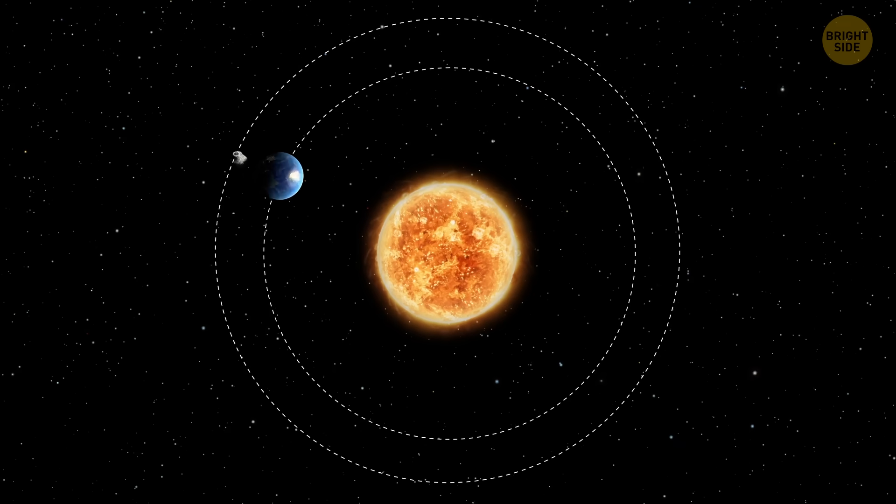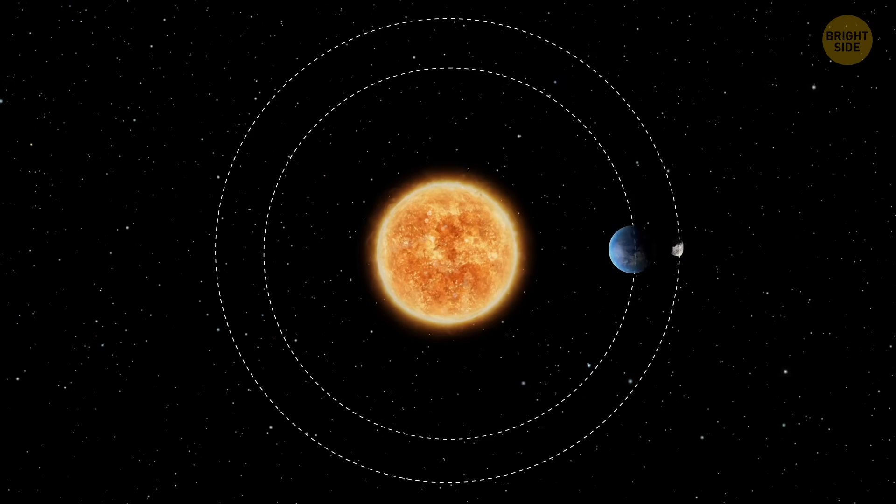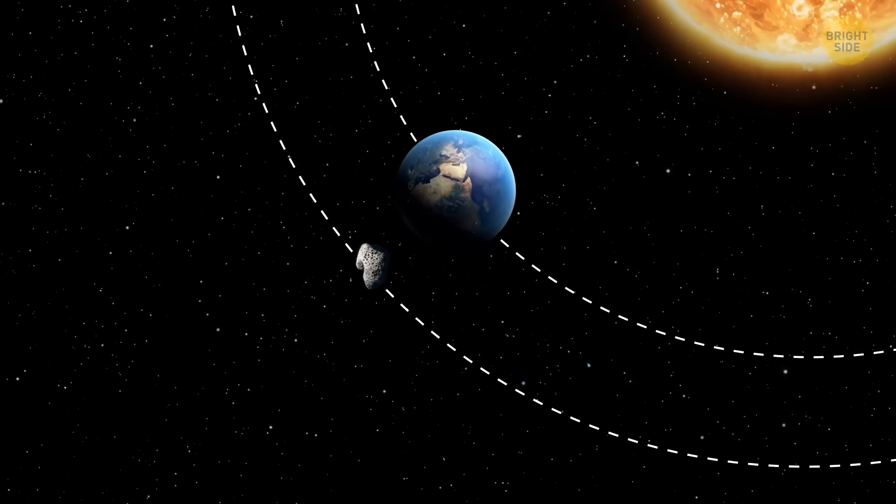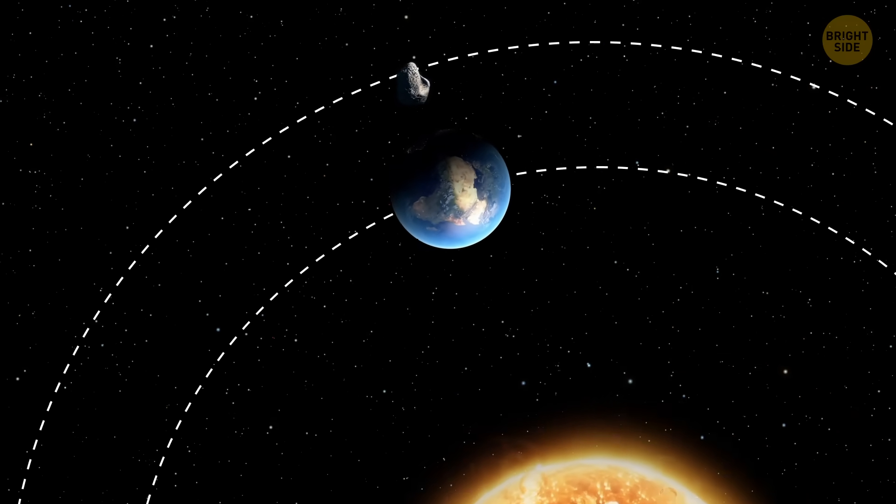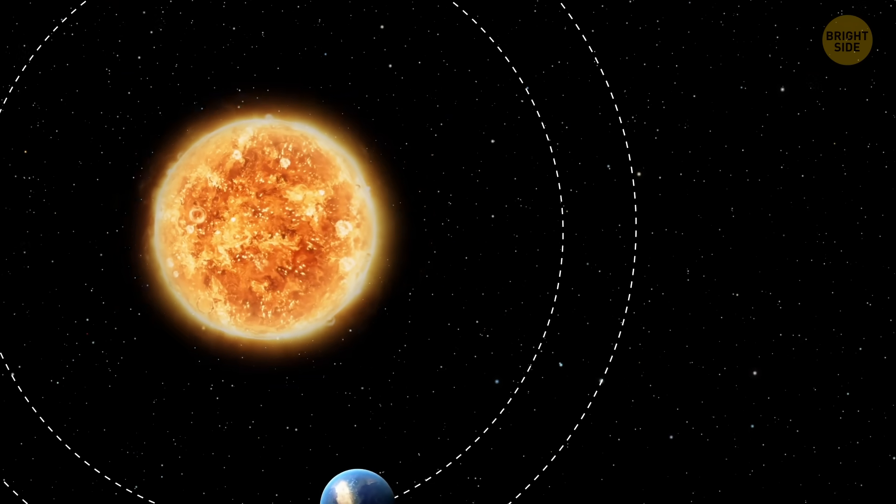To us, it looks like the rock is scribbling lazy loops around Earth's path, like doodles in space. Yet it never lags too much or gets too far. Astronomers call this a one-to-one resonance. In plain English, it makes a lap around the Sun every time Earth does.